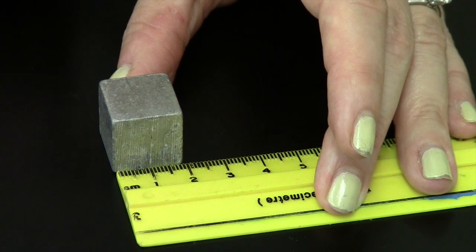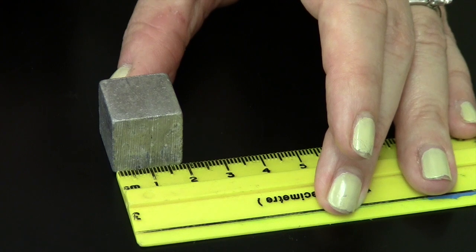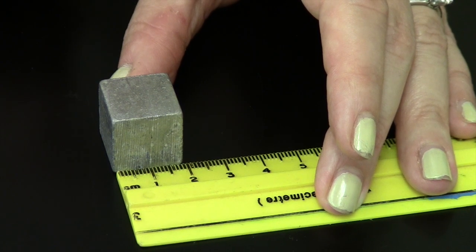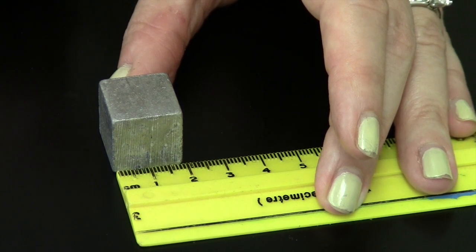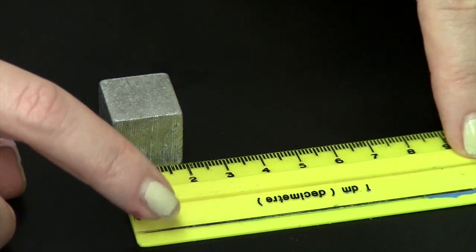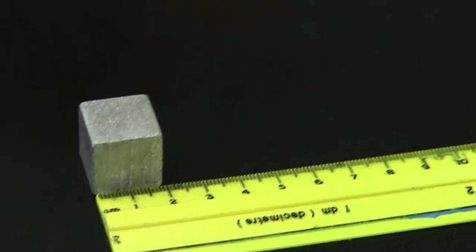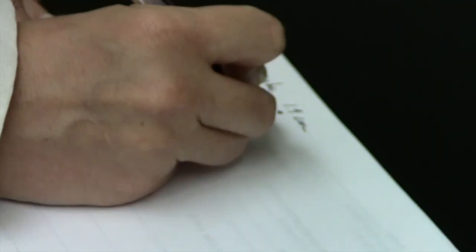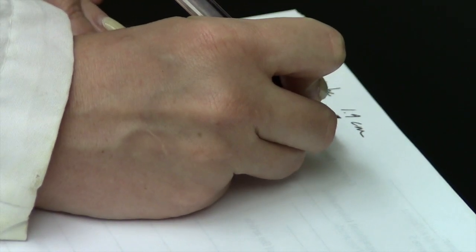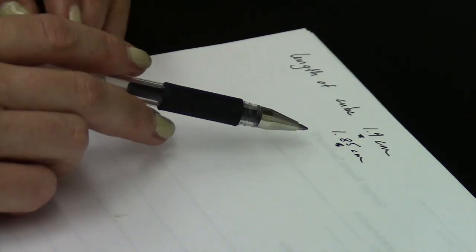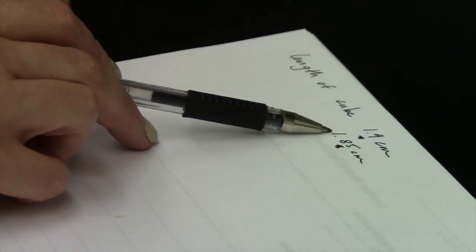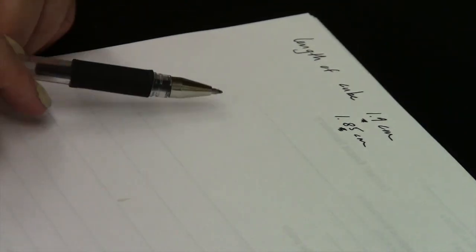So it's awfully hard to estimate that last digit perfectly, but we can say maybe 1.85 as the length of this cube, and again it's the 5 that's the estimated digit. Some of you might think it's 1.87 or 1.83. These two we can be sure of from the markings here, but it's that last one we're estimating.